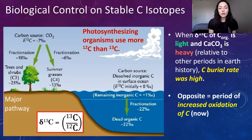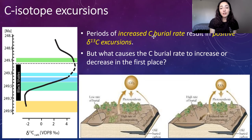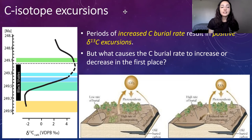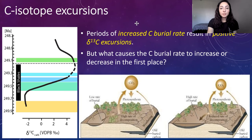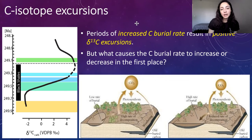An example of a positive carbon isotope excursion that occurred in Earth's history around the early Mesozoic due to increased carbon burial rate is shown in the graph to the left. During this time, around 249 to 248 million years ago, there was a huge jump in carbon isotopes of inorganic carbon, or calcium carbonate, caused by an increased carbon burial rate. You can see where black shales were formed due to organic carbon burial, and this left over only very heavy carbon isotopes for calcium carbonate to incorporate into their mineral structures.